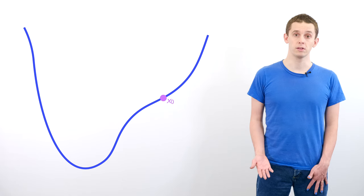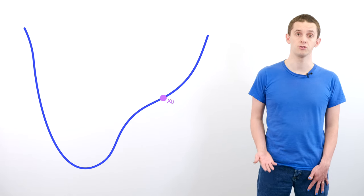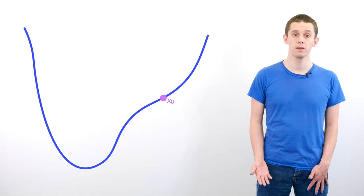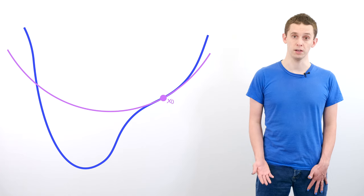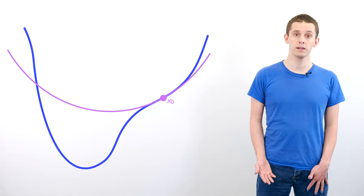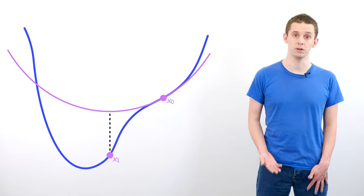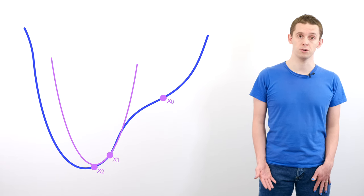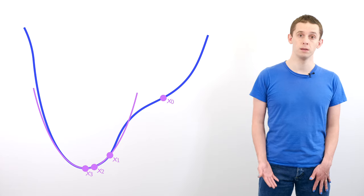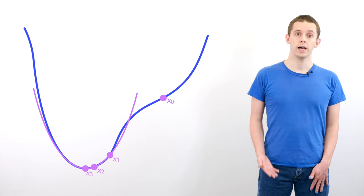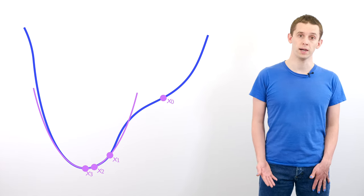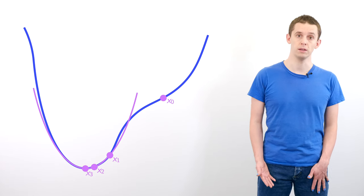To illustrate this, let's look at a one-dimensional function. Suppose we started at a point x_0. If we evaluated the first and second derivative of our function there, then we could construct a quadratic approximation to our function. We could then define our next step x_1 as the stationary point of this quadratic. We could repeat this procedure to find our next step x_2, and we can see that as we approach the minimum of this function, our approximation as a parabola will become more and more accurate and therefore we'll have rapid convergence to the local minimum.